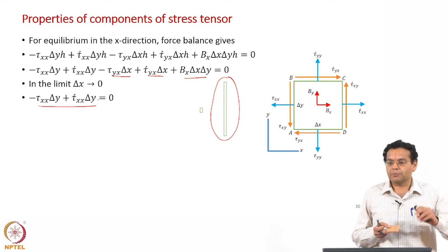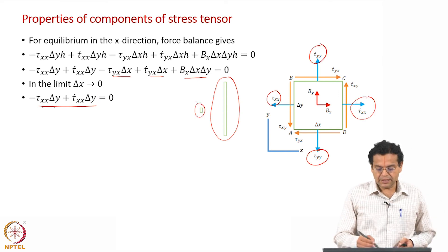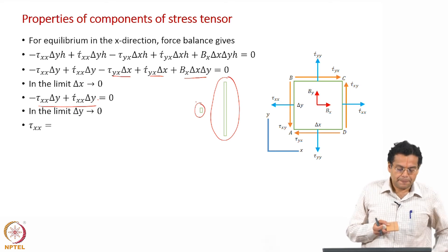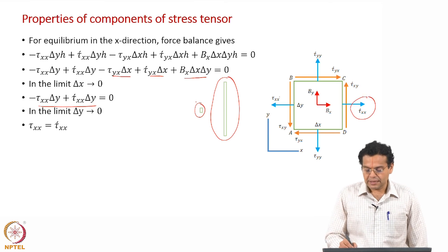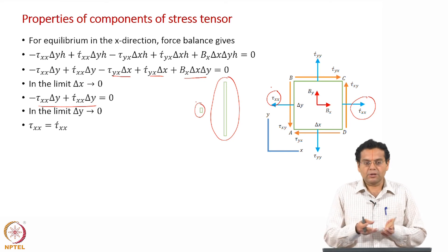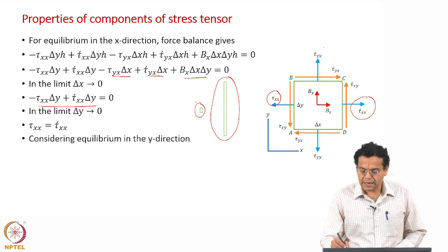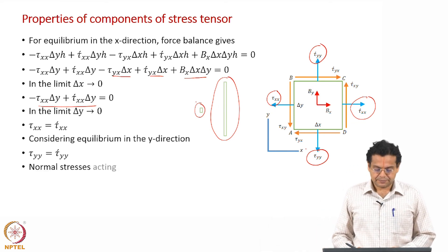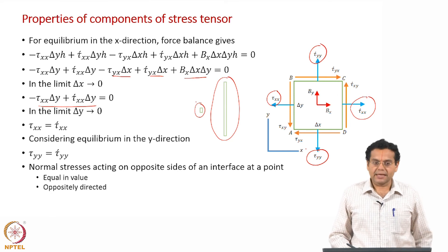Then we take delta y tending to 0 — the vertical line becomes a point. The relationship we obtain is tau xx equals tau dash xx, valid at every point on the face. This means the normal stresses acting on opposite sides of an interface are equal in magnitude and opposite in direction. Repeating the same exercise along the y direction proves the same for those normal stress components.